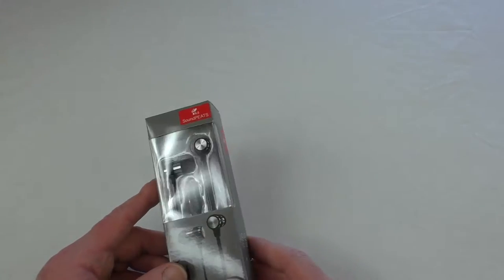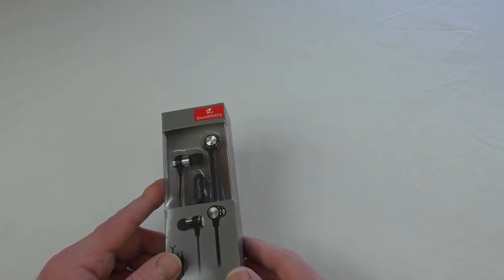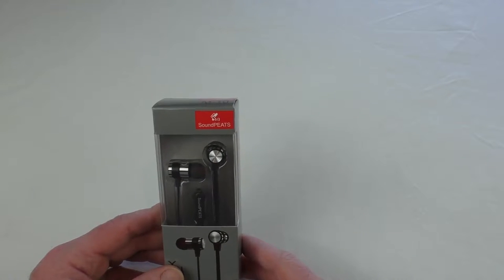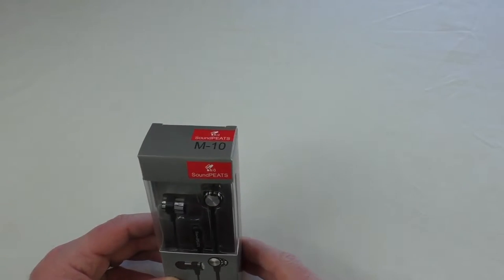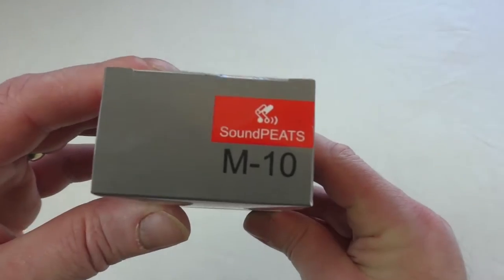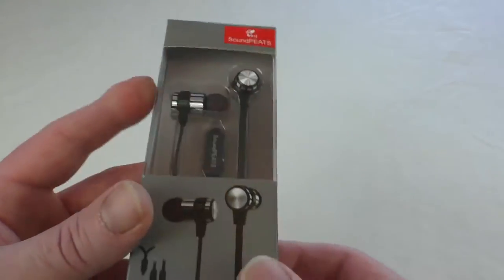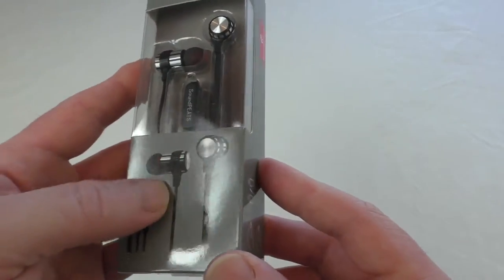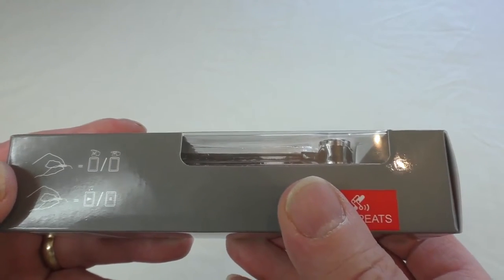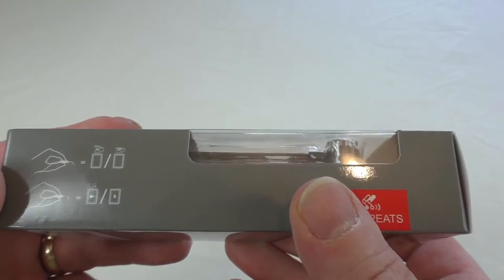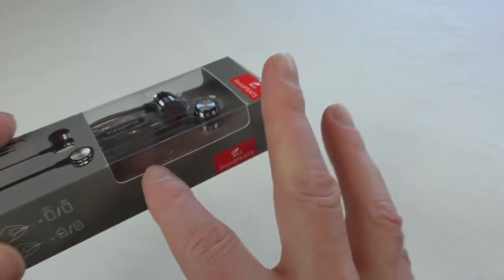Alright guys, got an unboxing here for you. This is the latest budget wired headphones from SoundPEATS, the M10. You can see them through the box there, you've got another picture of them on the box underneath. They have a 3.5mm headphone jack with a remote on them as well.